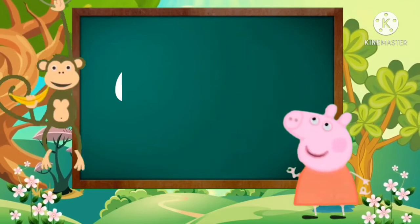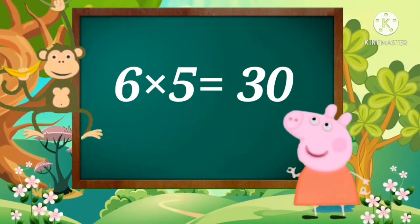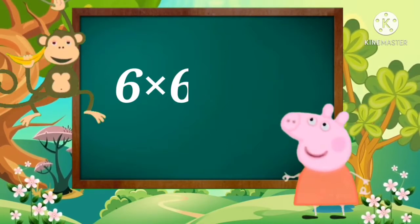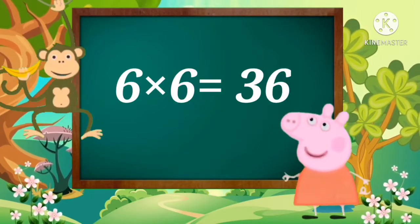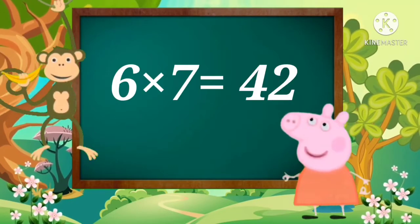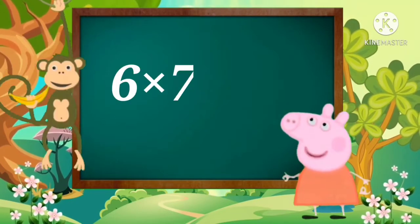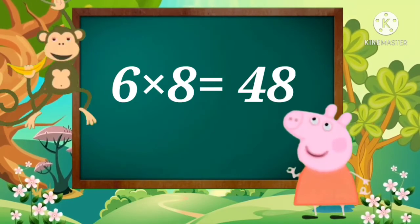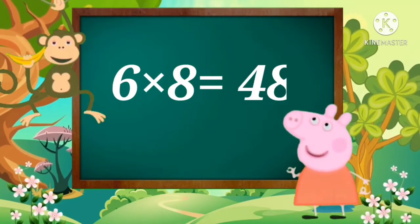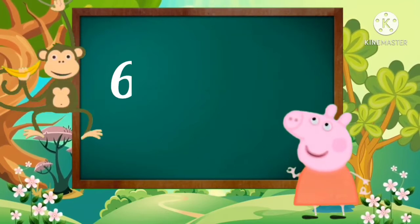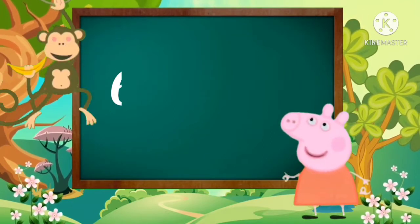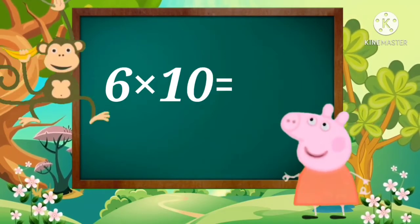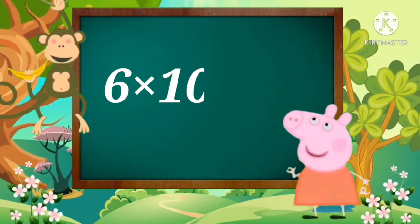Six fives are thirty. Six sixes are thirty-six. Six sevens are forty-two. Six eights are forty-eight. Six nines are fifty-four. Six tens are sixty.